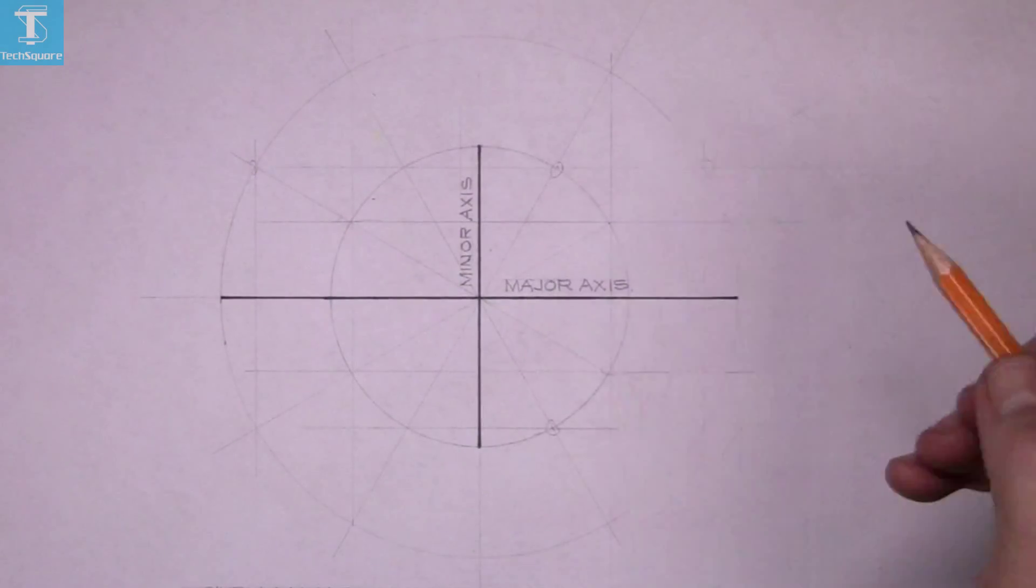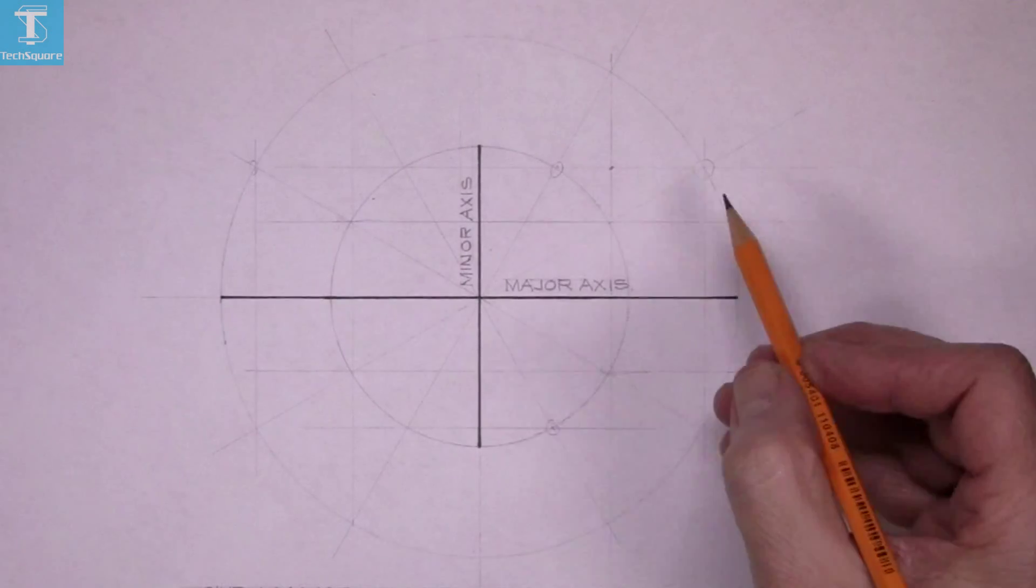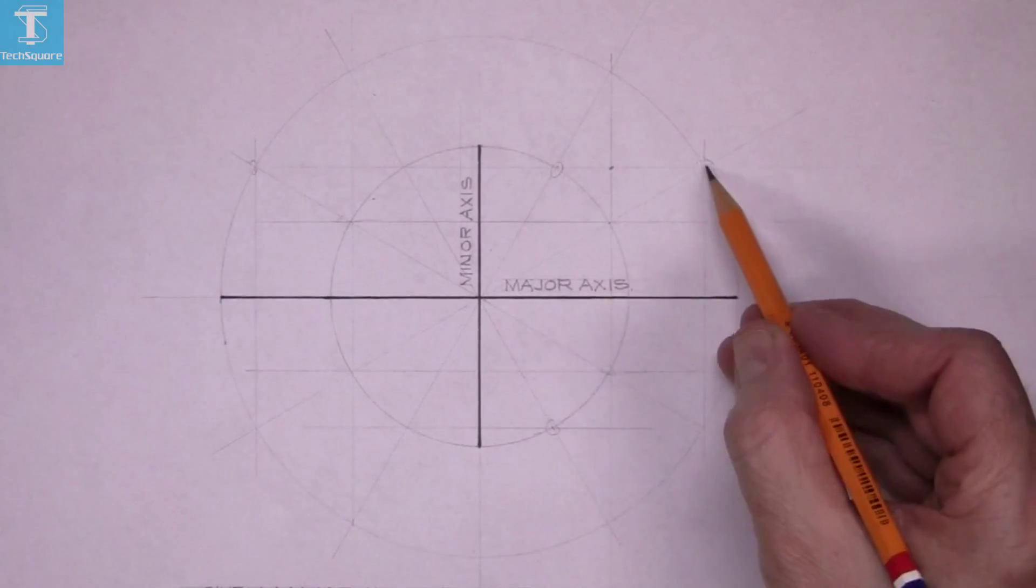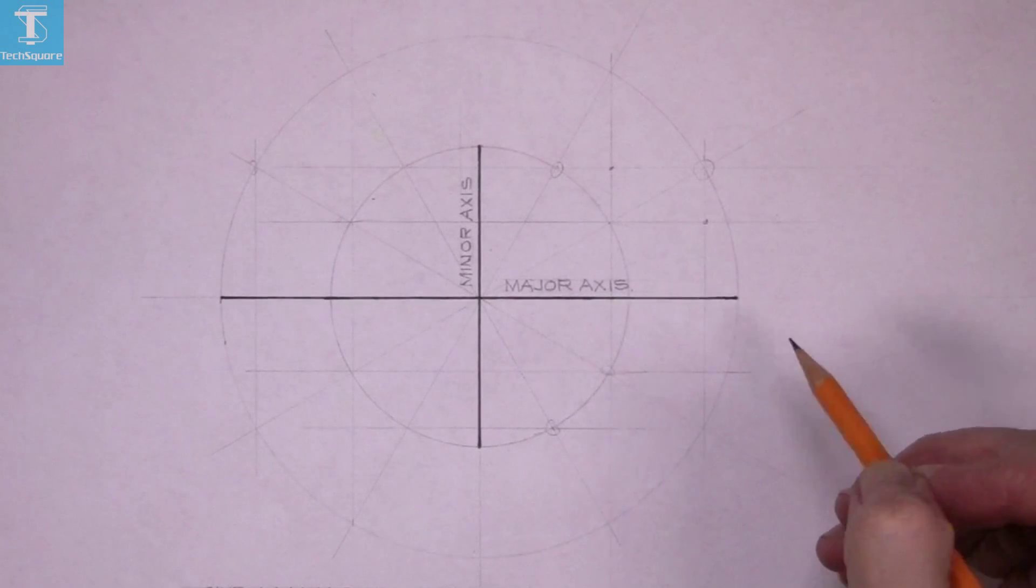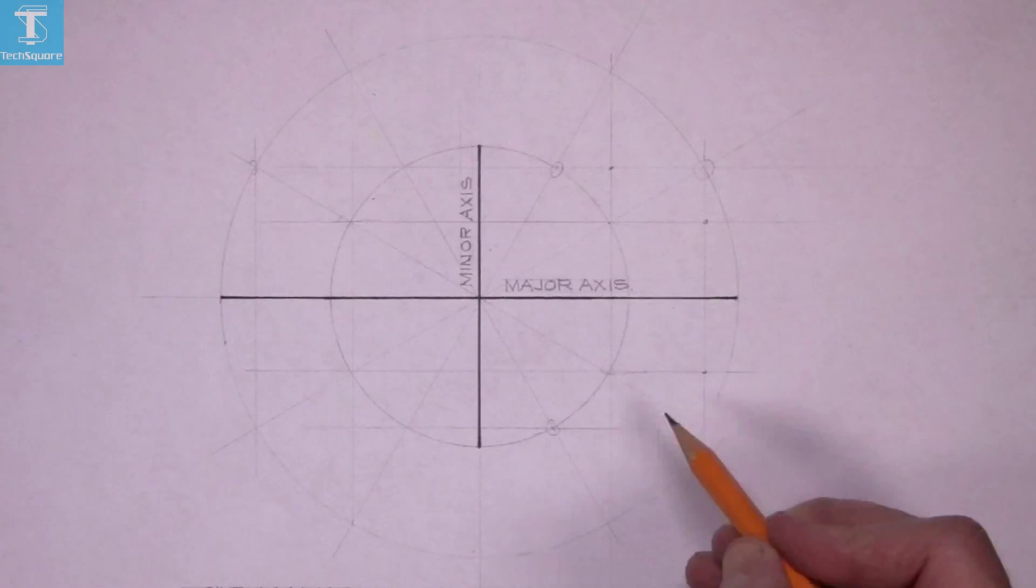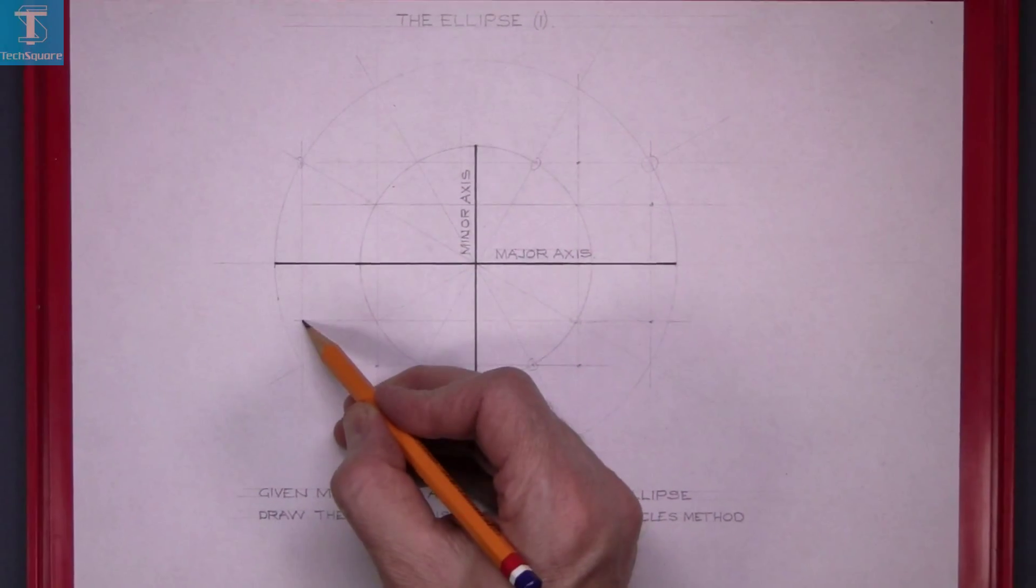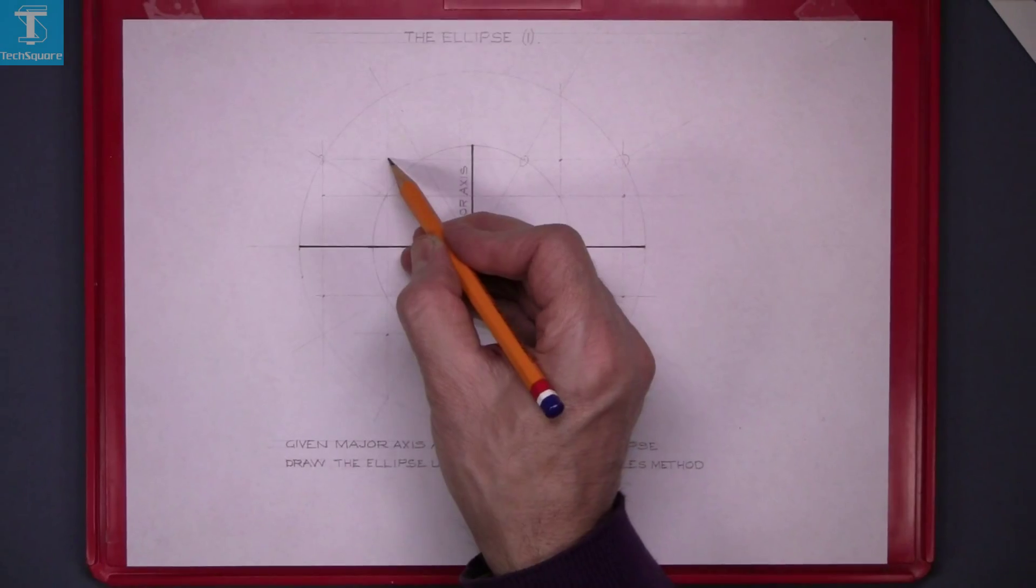Now to get the points on the ellipse. Where these two lines meet, where the vertical and horizontal line meet, that point, that's a point on the curve. And that's a point on the curve there. And that gets you the points on the curve of the ellipse.